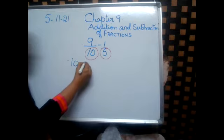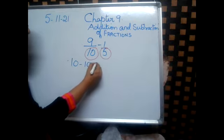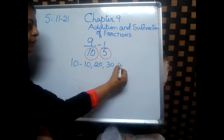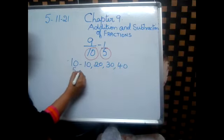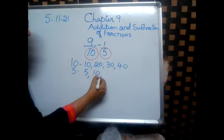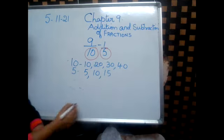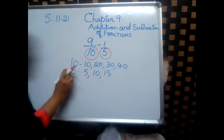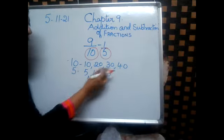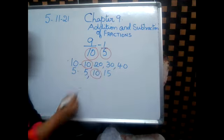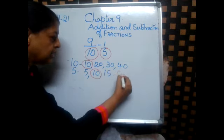All the multiples of 10: 10, 20, 30, 40. All the multiples of 5: 5, 10, 15. In the 5 table there is 5, 10, and 15. In the 10 table there is 10, 20, 30, and 40. The common multiple is 10 in both. So, this common one is 10.